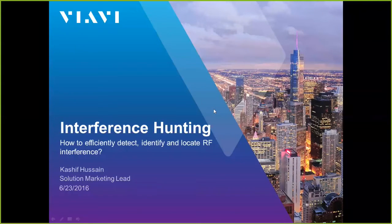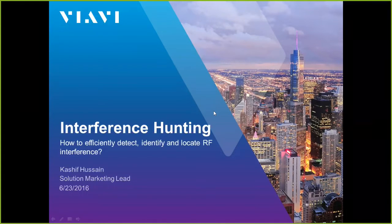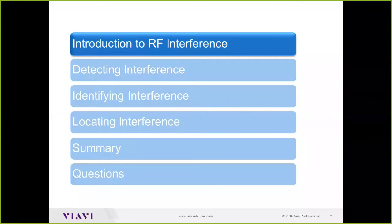Thank you, Kyle. We will go over interference hunting techniques — how do we hunt for interference. There are three key steps: detection, identification, and location. A lot of time is spent on the last aspect — location — especially when sources are hidden and difficult to identify in dense urban environments. We'll talk about advanced solutions that have recently come to market. We'll cover what interference is, what tools are available, then detection, identification, location, and close with a summary and questions.